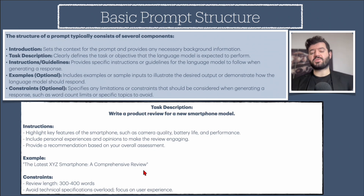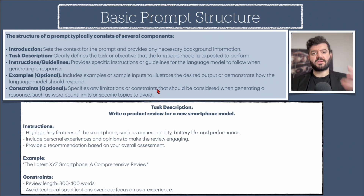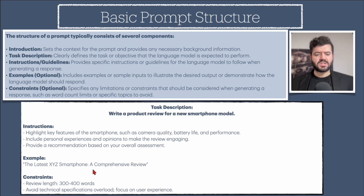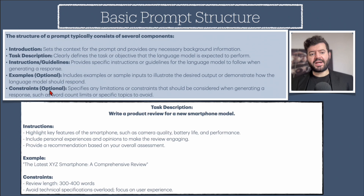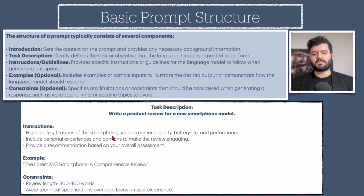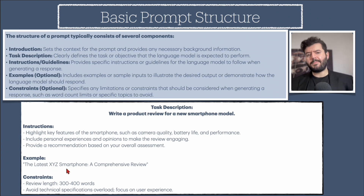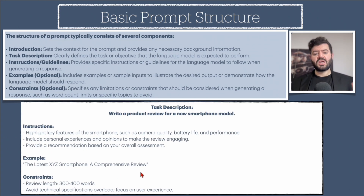So these are the general components that form the structure of a prompt: the instruction — highlight, include, provide — using the XYZ smartphone as an example, ensuring the review length is 300 to 400 words, and avoiding technical specs overload while focusing on user experience. As you can see, I've combined the elements for a basic prompt structure. When you input this into ChatGPT — highlight key features, write a product review, compare it to XYZ, keep it 300–400 words, avoid specs overload, focus on user experience — you get a structured, requirement-meeting output.